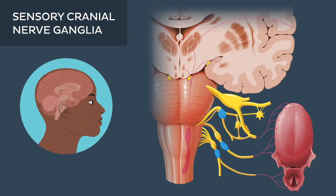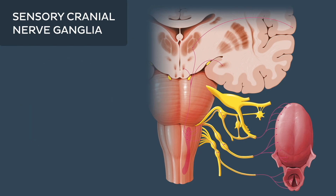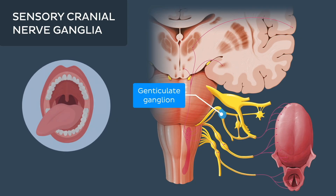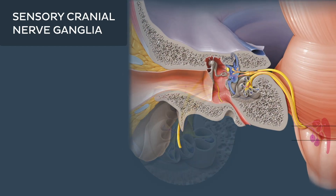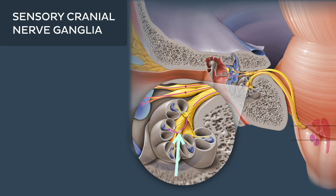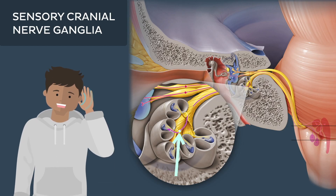There are eight such ganglia. For example, the geniculate ganglion of the facial nerve related to the sensation of taste, or the cochlear ganglion of the vestibulocochlear nerve related to the acoustic pathway.